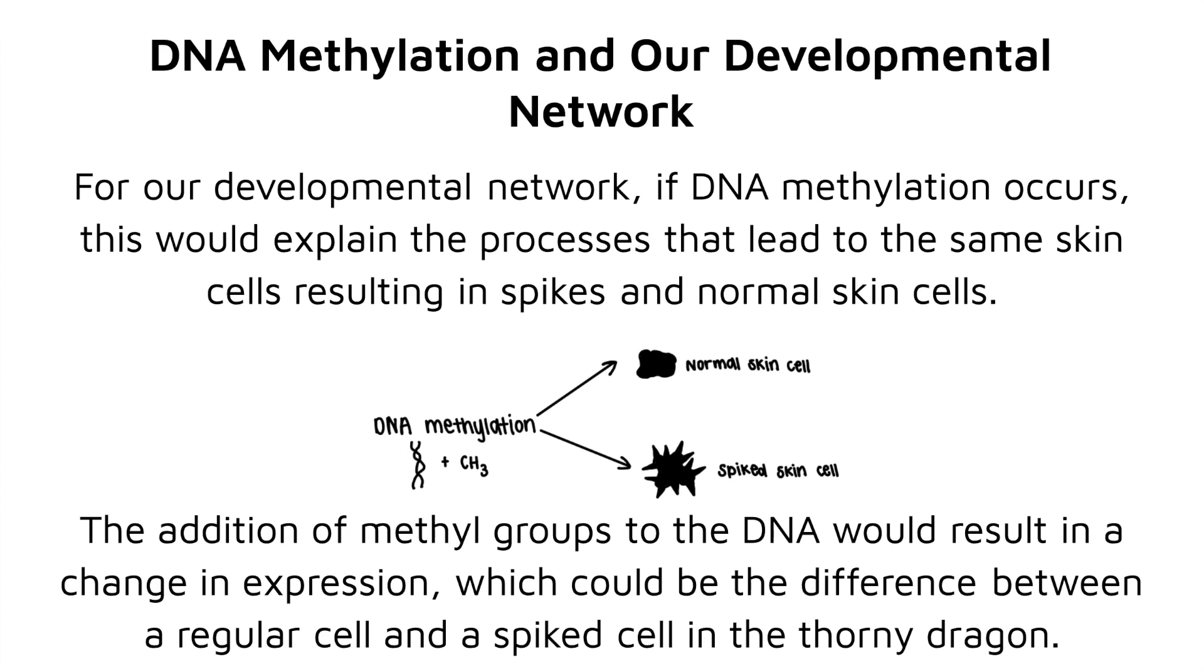For our developmental network, if DNA methylation occurs, this would explain the processes that lead to the same skin cells resulting in spikes and normal skin cells. The addition of methyl groups to the DNA would result in a change in expression, which could be the difference between a regular cell and a spiked cell in the thorny dragon.